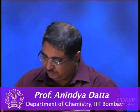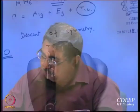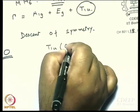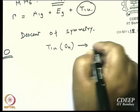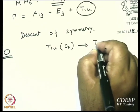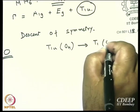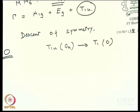We are going to take advantage of this group-subgroup relation and work with the subgroup O. What is T1U in the octahedral Oh point group becomes a T1 in the O point group.